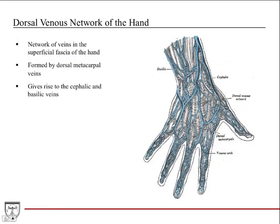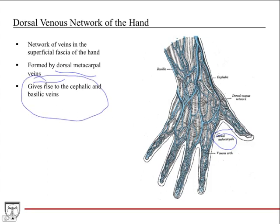The dorsal venous network of the hand is a network of veins in the superficial fascia of the hand — these are the veins you can see popping out on the back of your hand. They are formed by the dorsal metacarpal veins, which drain the fingers. Importantly, this network gives rise to both major superficial veins of the upper extremity: the cephalic vein, which goes up the radial side, and the basilic vein, which goes up the ulnar side.